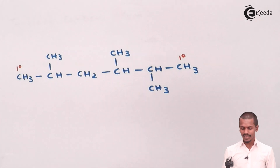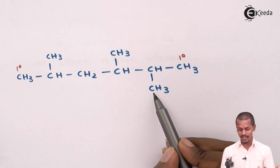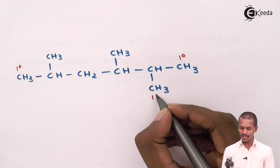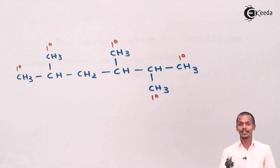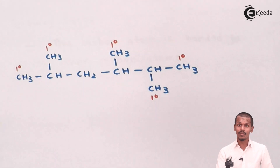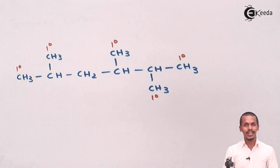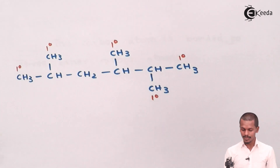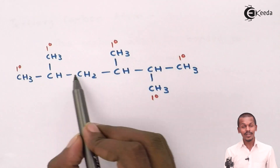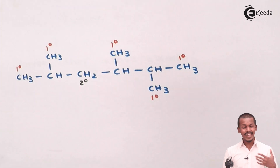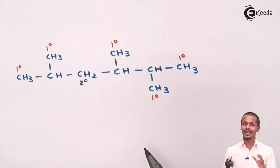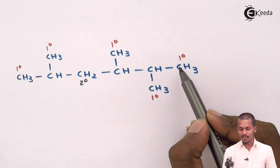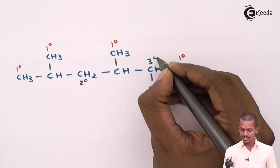All the methyl groups in this structure are primary carbon atoms. A CH₃ group, whether at the terminal or in a branching, is always a primary carbon atom. For secondary, this carbon atom is attached to two different carbon atoms, so it is a secondary carbon atom. But this carbon is not attached to only two — it is attached to three other carbon atoms, making it a tertiary carbon atom, denoted by 3 degrees.